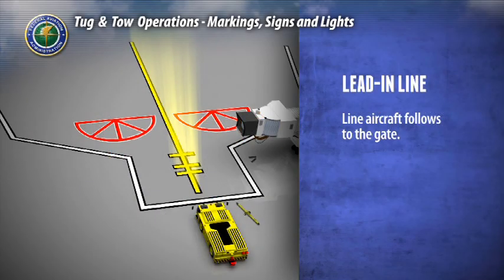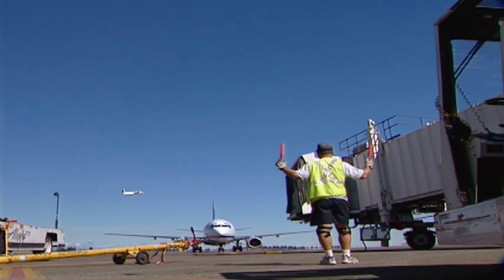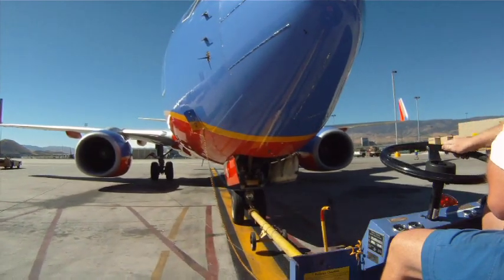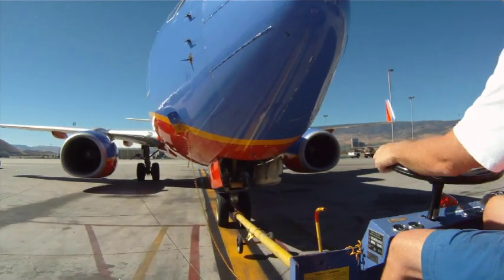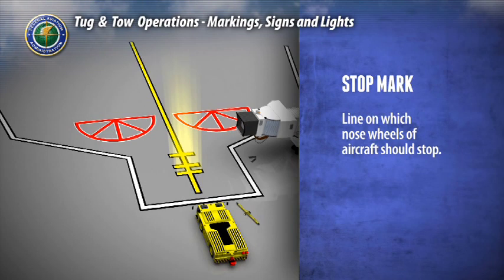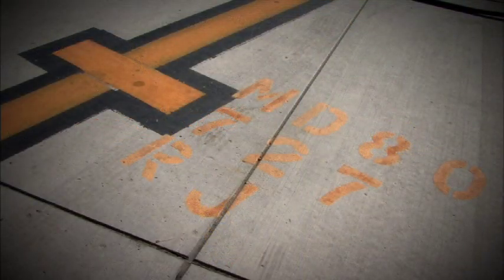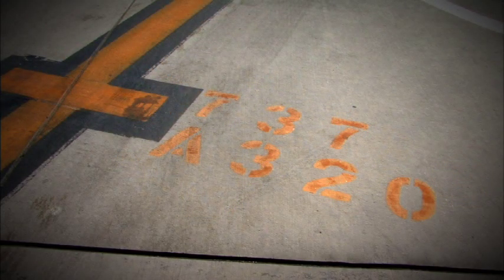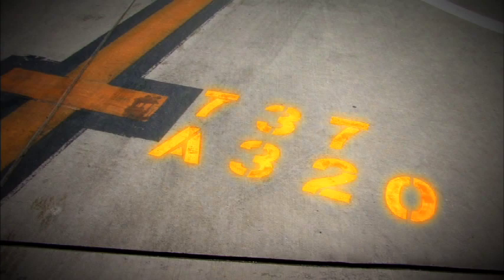The lead-in line is the line that the aircraft follows to the gate. This line is yellow with a black outline. The ground marshal will direct the aircraft so that its nose wheels straddle the center of this line. When towing an aircraft out of the ramp, the tug operator should also use this line as a general guide. The stop mark is the line on which the nose wheels should stop — the marshal will signal this to the pilot. This line may be along different areas of the lead-in line depending on the type of aircraft allowed at the gate. There may be multiple lines and aircraft type indicators next to the appropriate line.